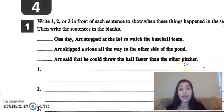Okay, think. Which one of these sentences happened first? You write a one next to it. Which one happened second? Write a two. Which one happened third? Write a three.